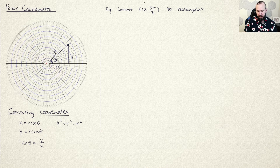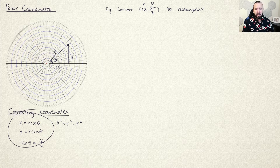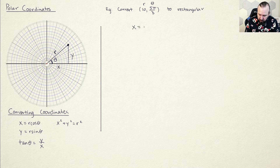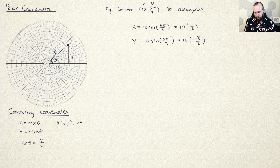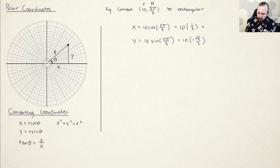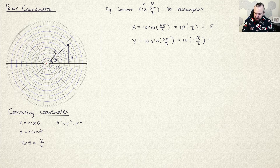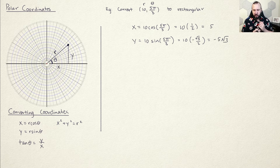Let's do the easy direction first: converting from polar to rectangular. Given the point 10 comma 5 pi over 3, x equals 10 times cosine of 5 pi over 3 and y equals 10 times sine of 5 pi over 3. From the unit circle, cosine of 5 pi over 3 is 1/2 and sine of 5 pi over 3 is negative square root of 3 over 2. So in rectangular coordinates, that gives us 5 comma negative 5 square root of 3.